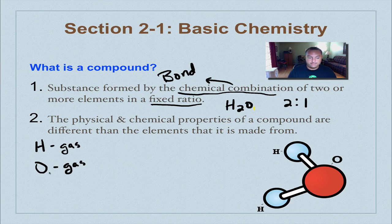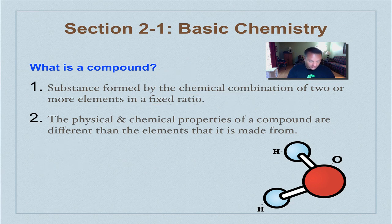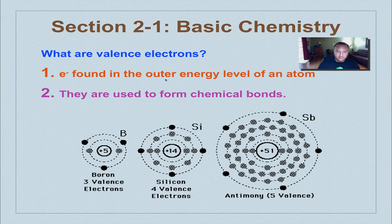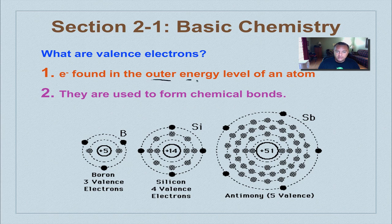All right, so what are valence electrons? These are electrons that are found in the outer energy level, and these guys are really important because what they do is they are used to form the chemical bonds. So if you look down here in all these pictures, we'll just focus on boron over here. Boron has one, two, three, four, five electrons, but we only care about the valence electrons, which are the outer level.